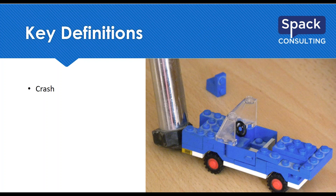It is important to mention that we want to call these crashes and not accidents. Accidents imply that the collision could have been avoided or happened by chance. We don't want to point fingers — it's not our job to assign blame. So we use the term crash. The next term is crash density: simply the number of crashes that occur per year. When doing an analysis, normally three to five years, you total the crashes and divide by the number of years.